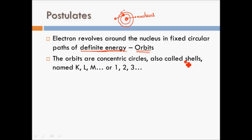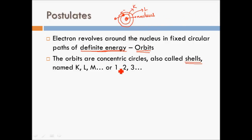The naming doesn't start from A — it starts from K. So the innermost shell or orbit is called K shell, then L, then M, then N, and so on. You can also call them shell number 1, 2, 3, and so on, where the innermost shell is shell 1 or shell K.